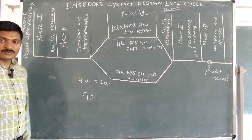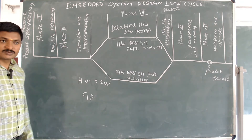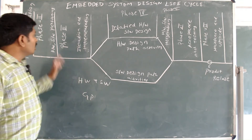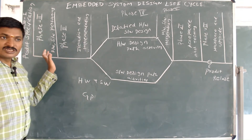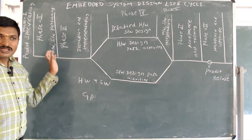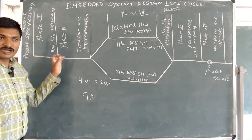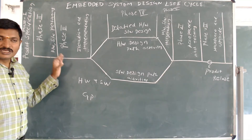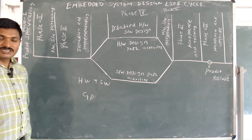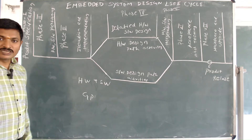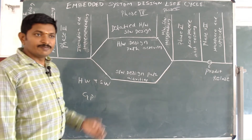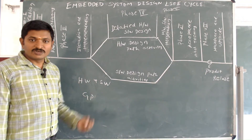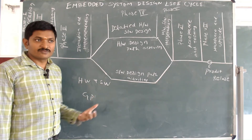The first phase is product specification. This is the initial phase of the Embedded System Design Life Cycle. In this phase, a research team is formed, consisting of R&D engineers, marketing engineers, and sales engineers. These teams visit several customers and outlets and collect feedback about existing products and customer requirements through a survey.